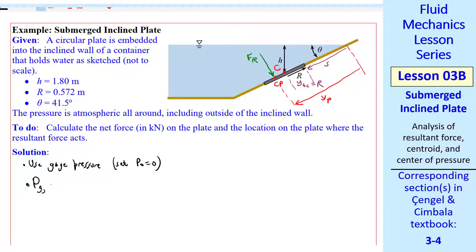I'll be a little more careful and use a subscript G for gauge pressure. PGAverage equal PGC at the centroid equal rho GH. And then the resultant force on the submerged surface, subtracting off atmosphere from both sides, is PGAverage times A. So that's rho GH times the area. Since this is a circle, that's simply pi R squared.